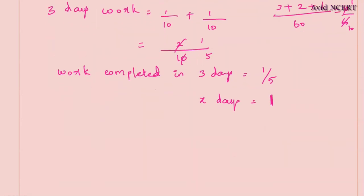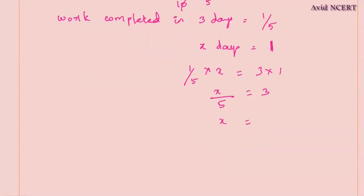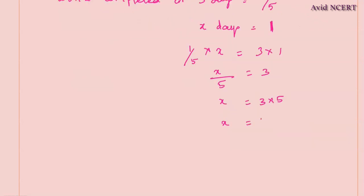We can find this by cross multiplication. 1/5 times x equals 3 times 1. x/5 equals 3. So x equals 5 times 3, which is 15.